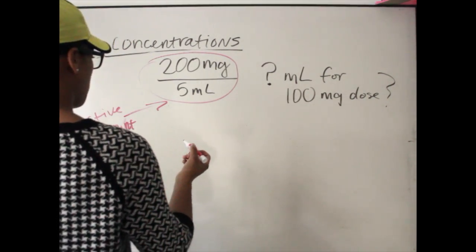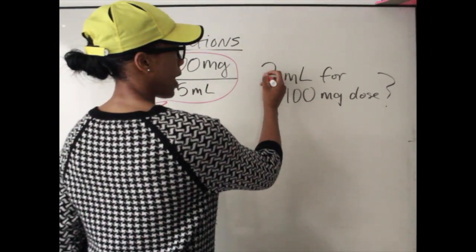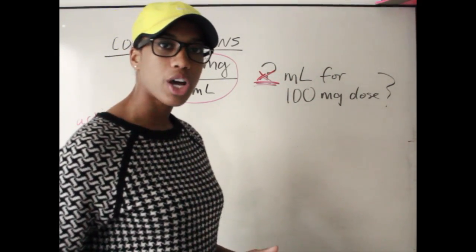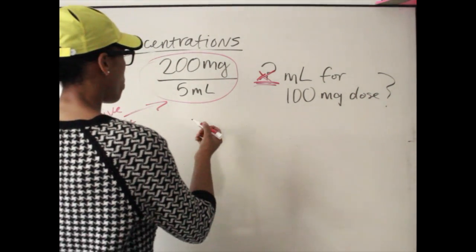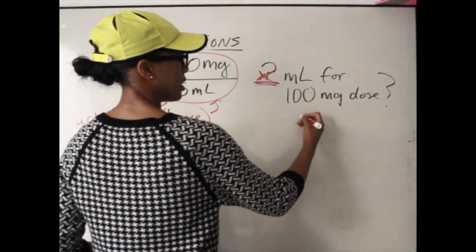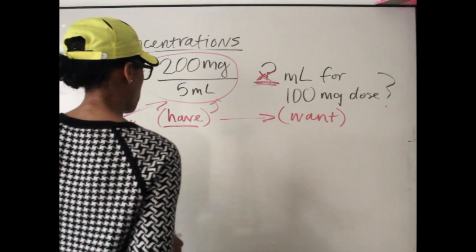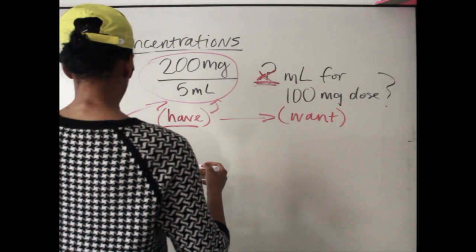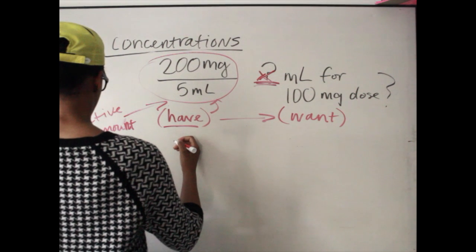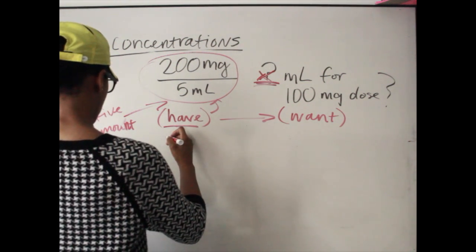So how we would set this up — remember how we looked at it with ratios and proportions — this is what we have, and this is what we want. We're trying to go from one point to another. We set it up with our known ratio on one side.